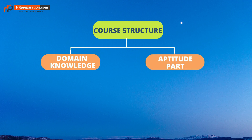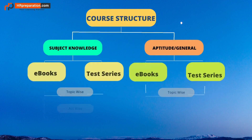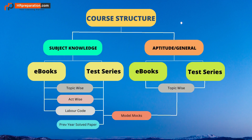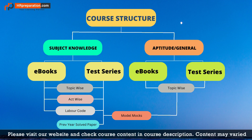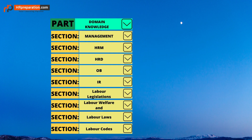This course has two parts: the first part is domain knowledge and the second part is aptitude. Both domain knowledge and aptitude parts consist of ebooks and test series, with topic-wise tests and model mocks combining both parts as per exam pattern. These two parts are again divided into sections — let's look at the individual sections of domain knowledge.